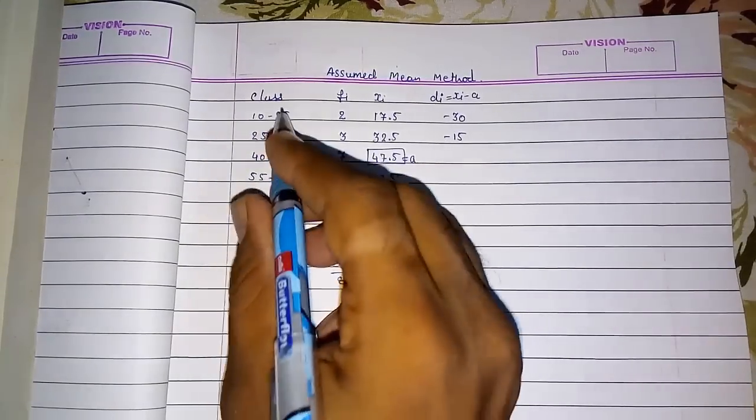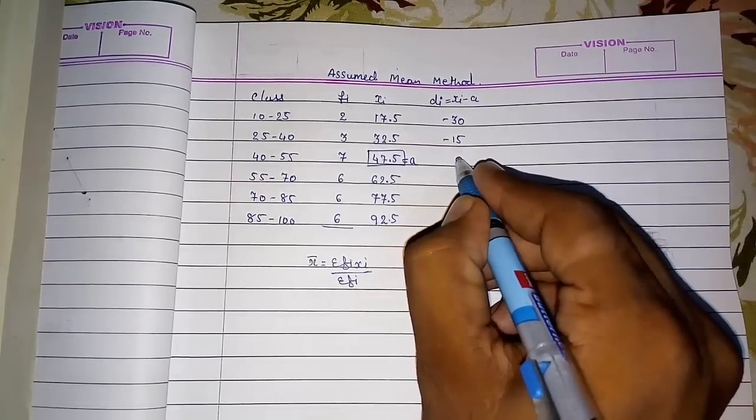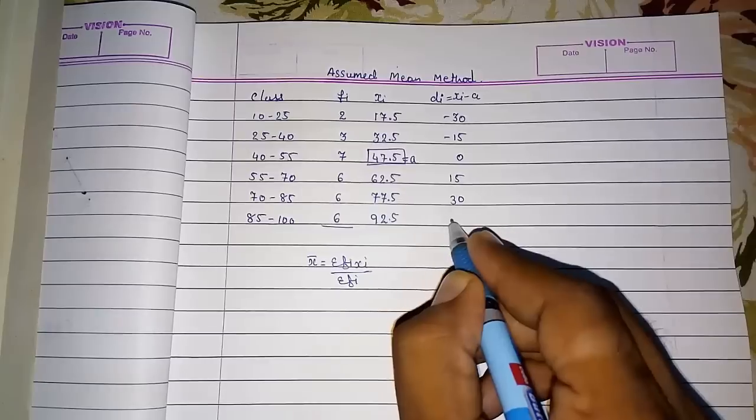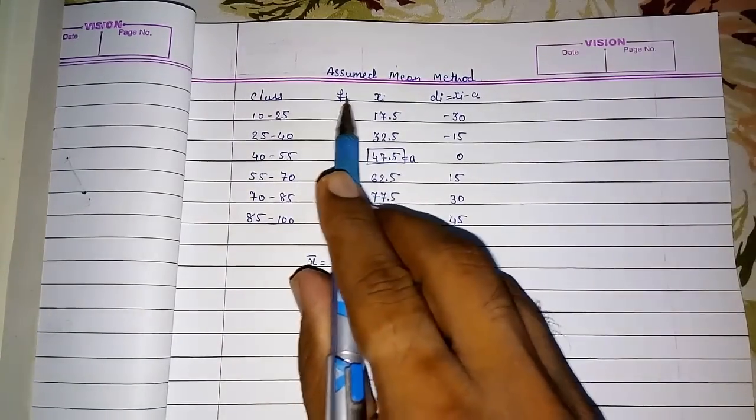Actually, you will get a pattern. The class interval is of 15, so every time 15 will be added in this. Now this will be 15, this will be 30, and this will be 45.